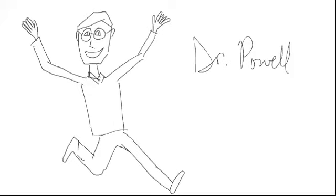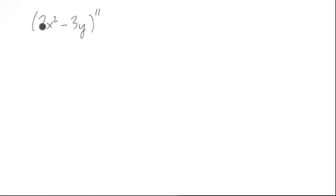Welcome to a lesson with Dr. Powell. Let's suppose that we wanted to multiply this out, 2x squared minus 3y all raised to the 11th power. How would we do it?